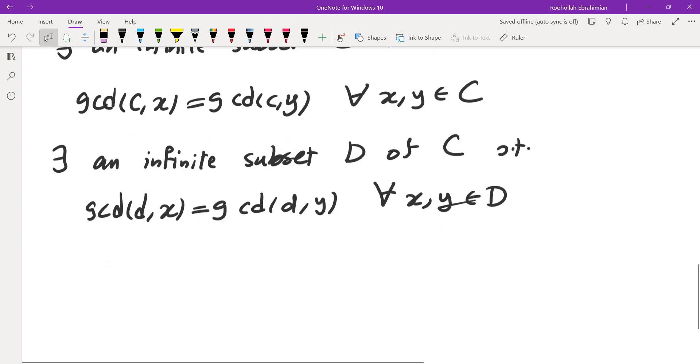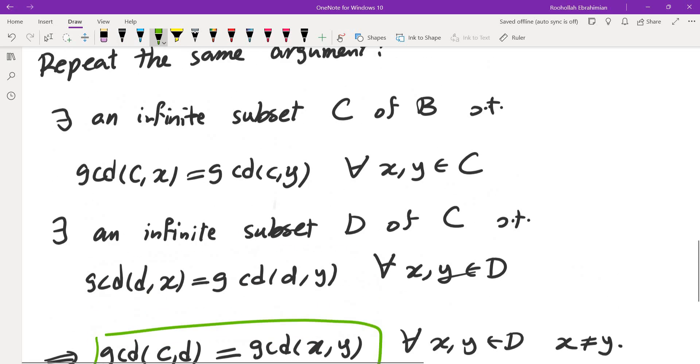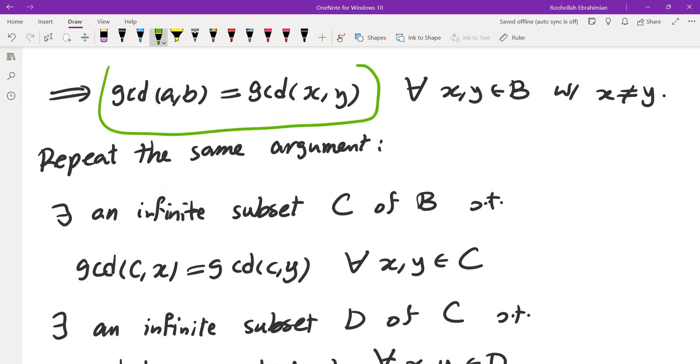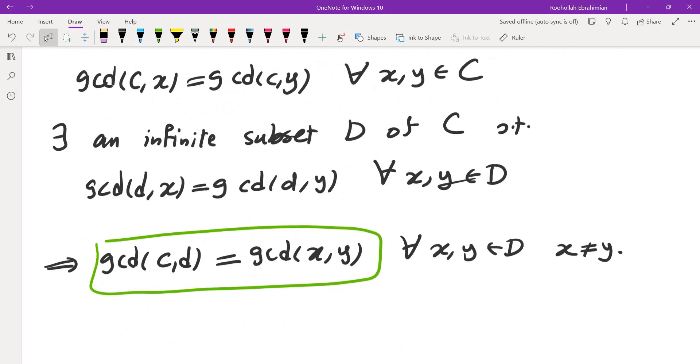So from here we obtain that gcd(C,D) by the exact same argument must be the same as gcd(X,Y) for every X, Y in D where X and Y are distinct. And this means gcd(A,B) and gcd(C,D) must be in fact the same, which is a contradiction.